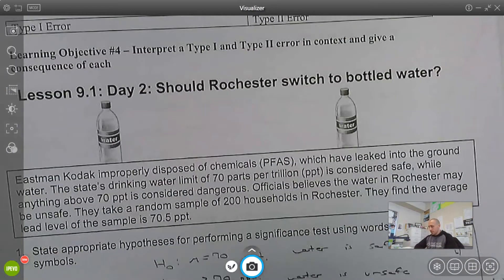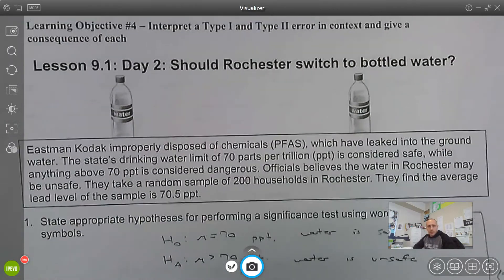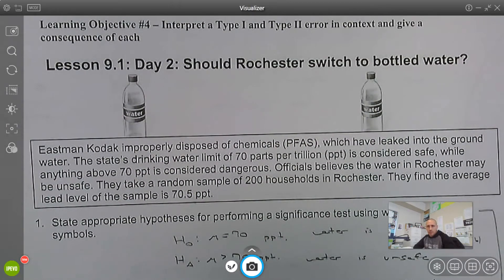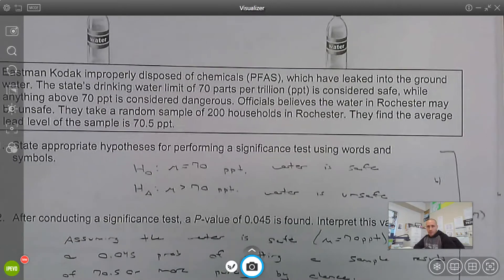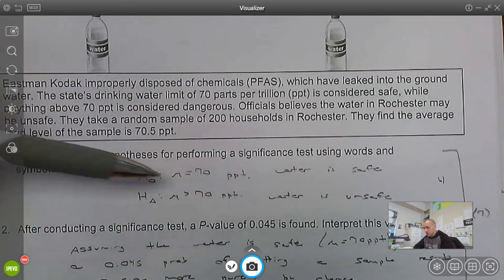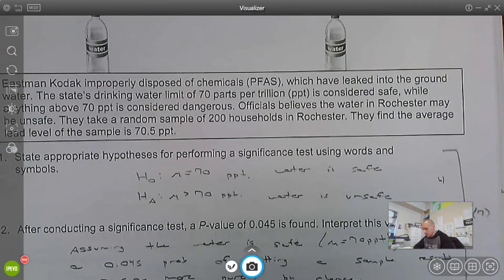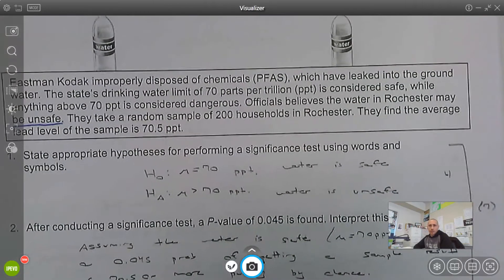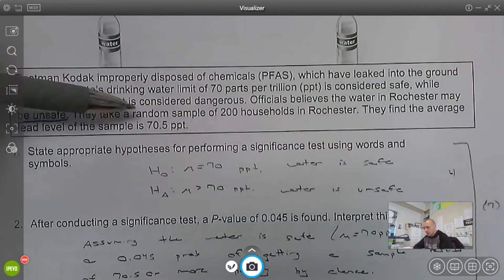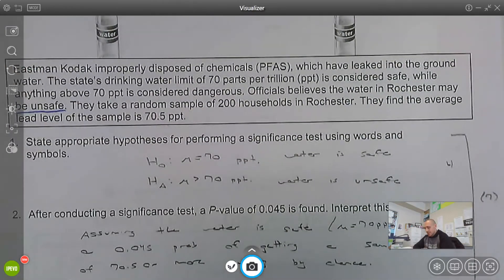Okay, looking at this. So here's what we know. This safe drinking level is 70 PPT. I see units, I immediately know this is quantitative, talking about means. So the null hypothesis would be mu equals 70. The alternative is mu is greater than 70. They believe that the water might be unsafe. The null is that the water is safe. The alternative is that the water is not safe.